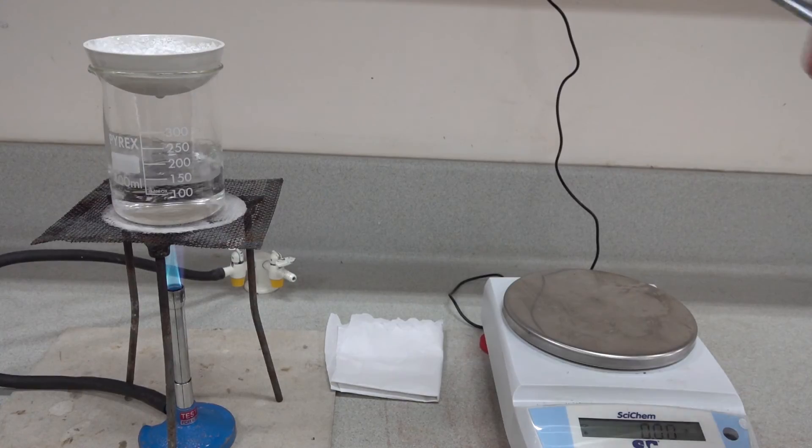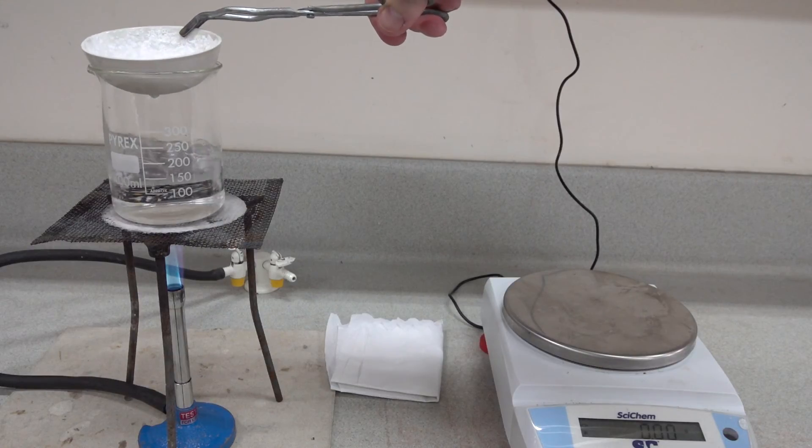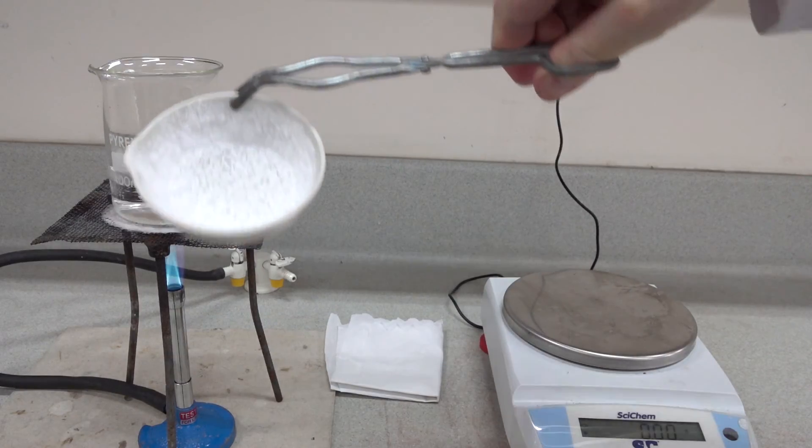Here we have an evaporating basin where we've been evaporating a saturated solution of potassium nitrate, and that is now evaporated to dryness.